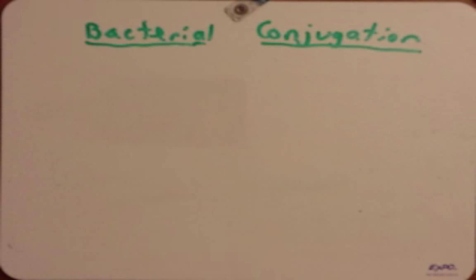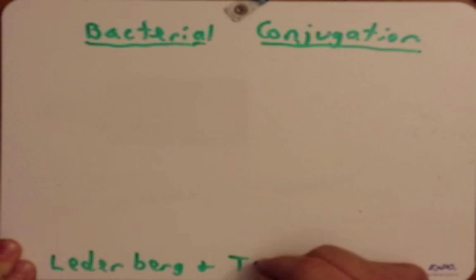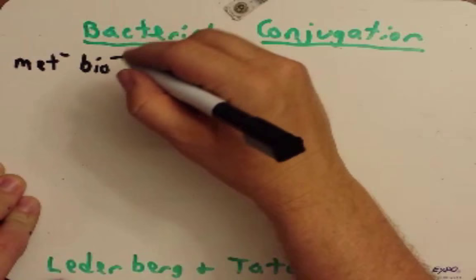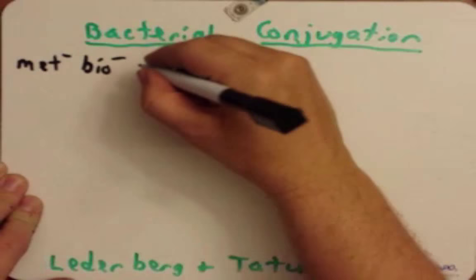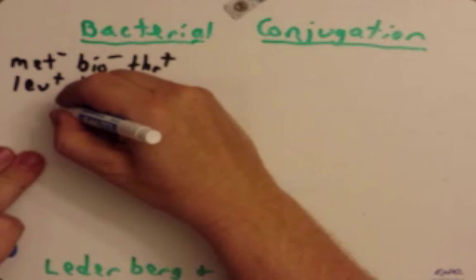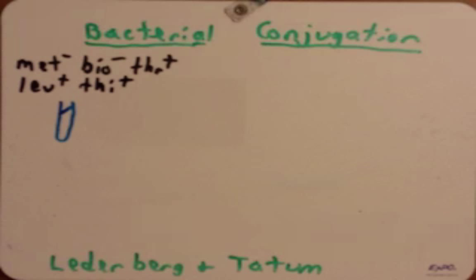These are experiments done by two scientists, Lederberg and Tatum. I'll write their names down here. What they did was they took some bacteria that were Met-minus, Biotin-minus, Threonine-plus, Leucine-plus, and Thiamine-plus. They grew these in a liquid culture, so they would grow in density and you'd have a lot of samples. Remember, a very important part of genetics is working with an organism that divides really fast, and bacteria does this better than anything.